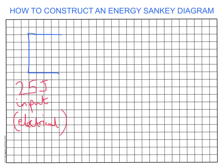The 25 joules — let's say we've lost 10. Each one of these squares represents five joules. Remember, it doesn't matter about the length, but it matters about the width. If we're losing 10, it needs to be two squares wide. We just draw an arrowhead, and we can say that is a 10 joule loss as kinetic energy.